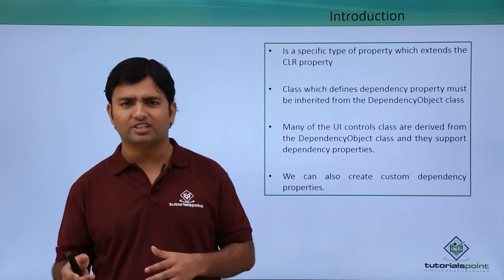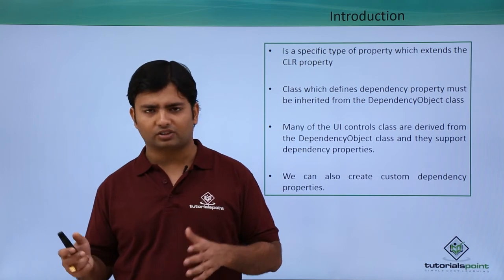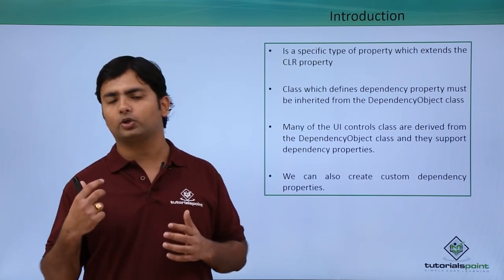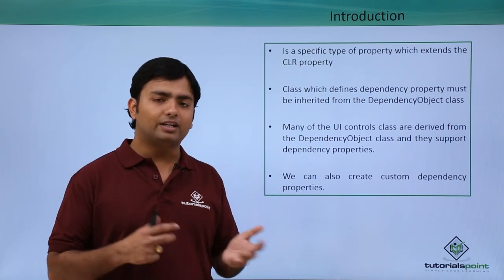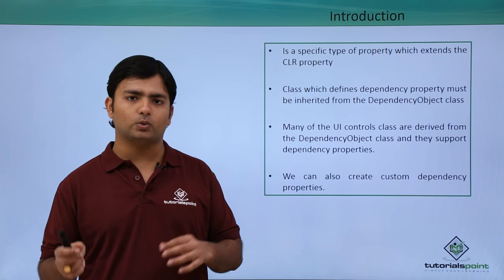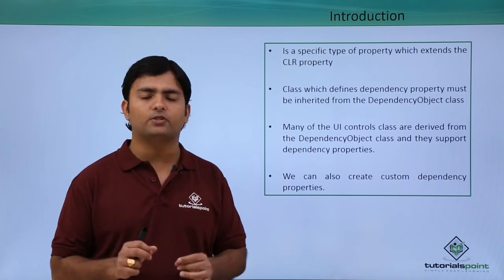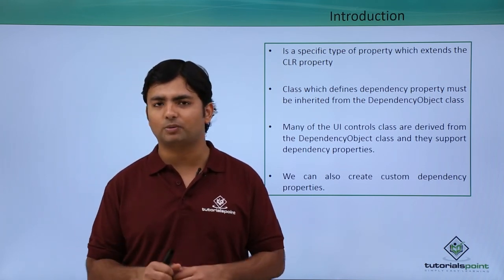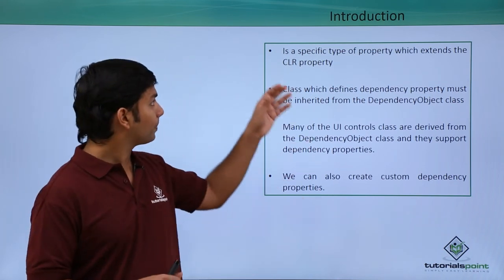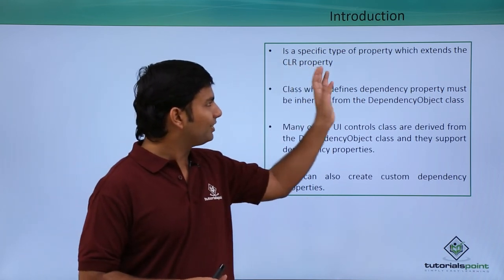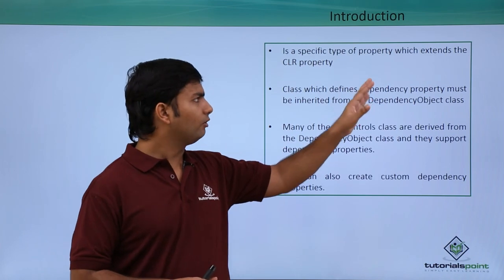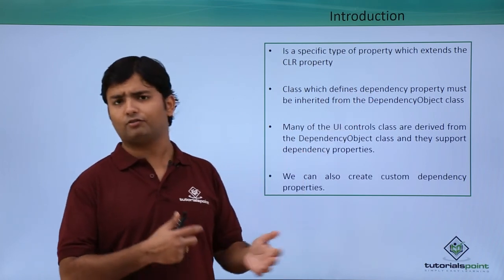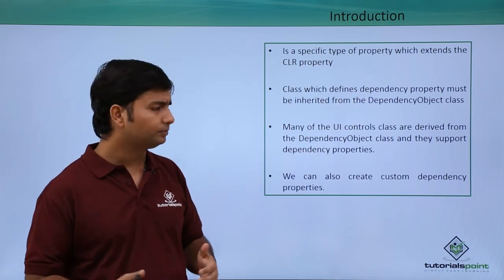Name is just an example, but even now if you want to give some additional property to any particular object, you can use dependency properties. It is a specific type of property which extends the CLR property, giving you an extension.